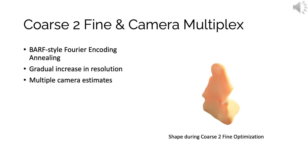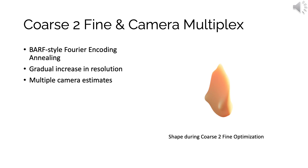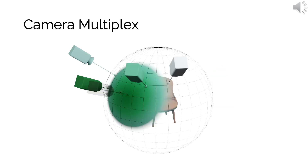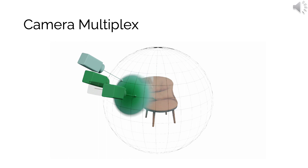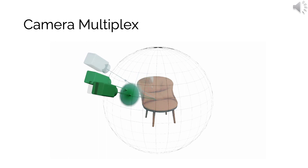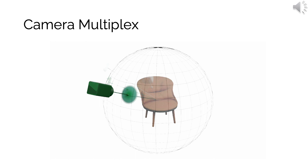We further propose to start with multiple initial camera estimates in a camera multiplex. We start with four random variants of an initial quadrant-based pose initialization. We only want to allow the best current camera to optimize the neural field, which we achieve using a posterior loss scaling. All camera poses are optimized, and previously worse camera poses can become the new best. We also reduce the number of concurrent optimized cameras during training, so that only a single camera persists at the end of our coarse-to-fine optimization.